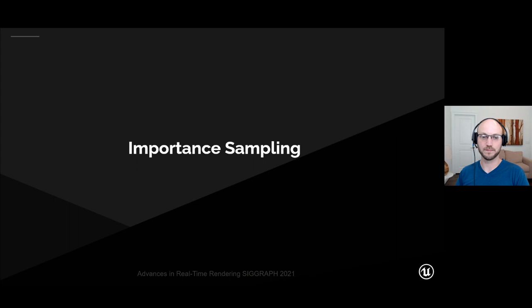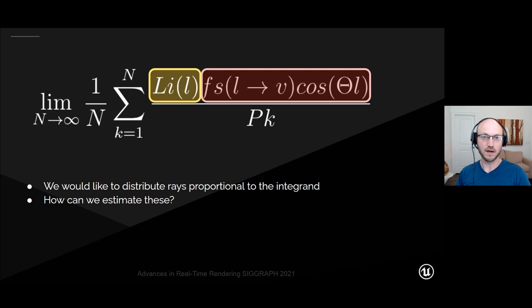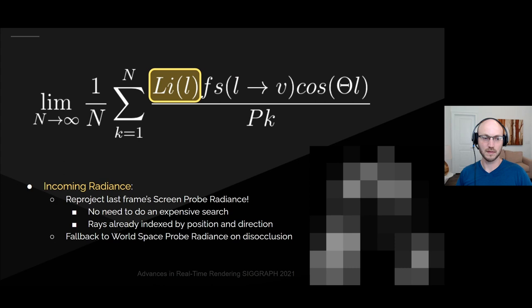The first technique is importance sampling. Going back to the Monte Carlo formulation of the rendering equation, we'd like to distribute our rays proportional to the functions we're integrating. But how can we estimate what these are, especially since incoming lighting is what we're trying to solve in the first place? It turns out we have a very good estimate of the incoming lighting just by looking at last frame's screen-space radiance cache. Instead of doing an expensive screen-space search, we reproject the current screen position into last frame and average the four neighboring screen probes — the rays are already indexed by position and direction, making that search fast.